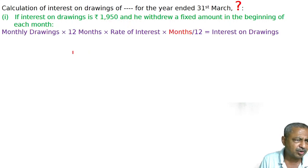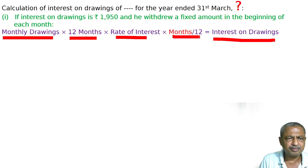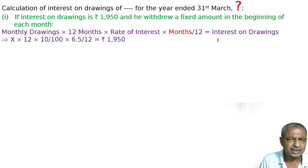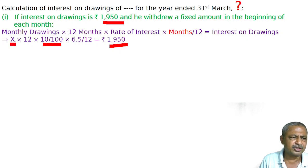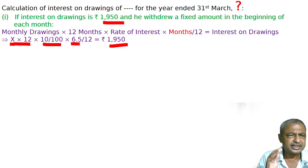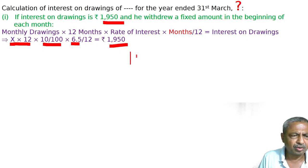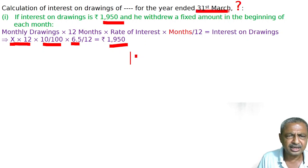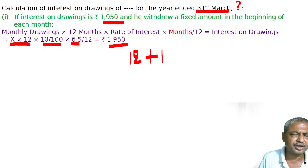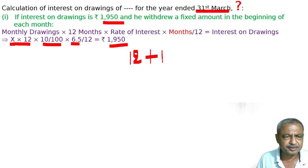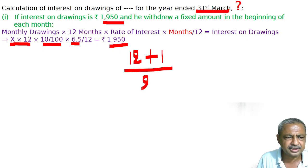Rate of interest is 10%. Interest on drawings is equal to monthly drawings multiplied by 12, multiplied by the rate of interest, divided by months by 12. He is drawing at the beginning of every month — for example, April 1st withdrawal. Year ending 31st March: first drawing has 12 months, last drawing on March 1st has 1 month. Average is (12 + 1) divided by 2, which equals 6.5 months.